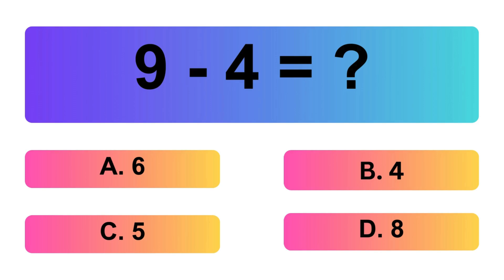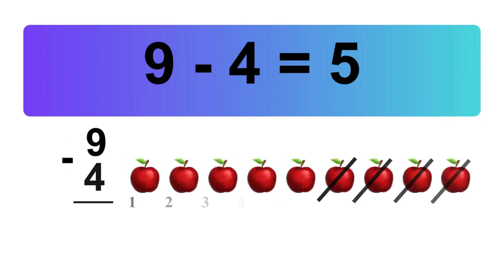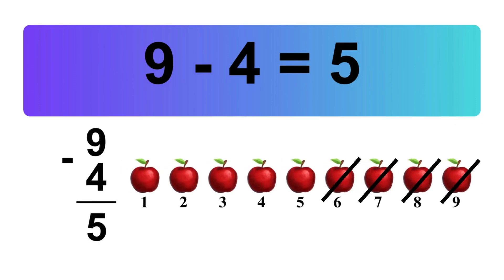9 minus 4 is equal what? Let's count it: 1, 2, 3, 4, 5. So, the answer is 9 minus 4 is 5.